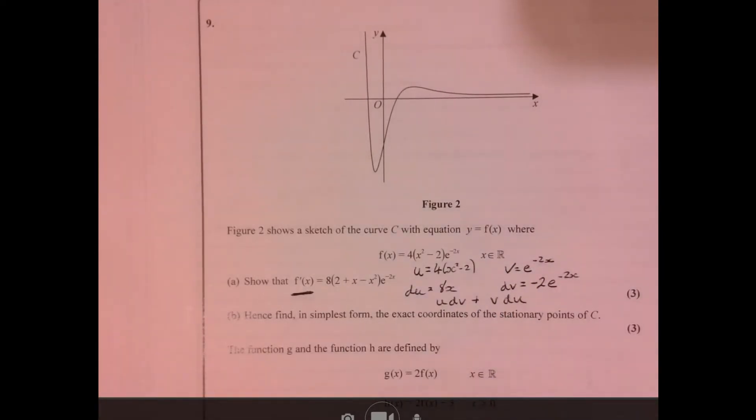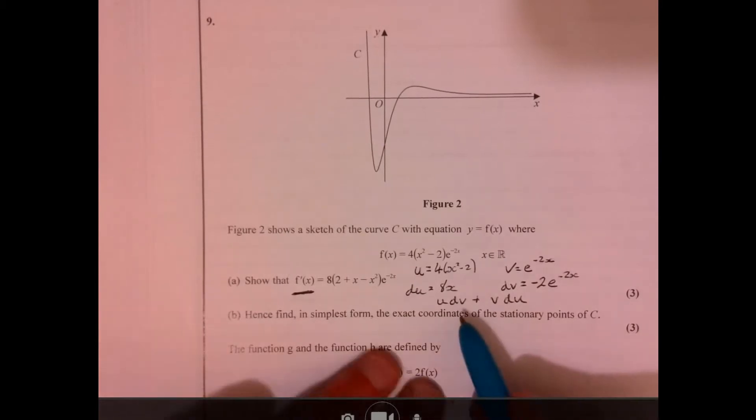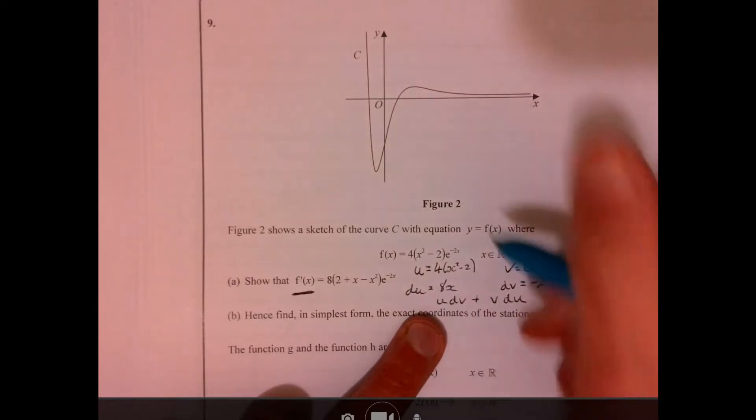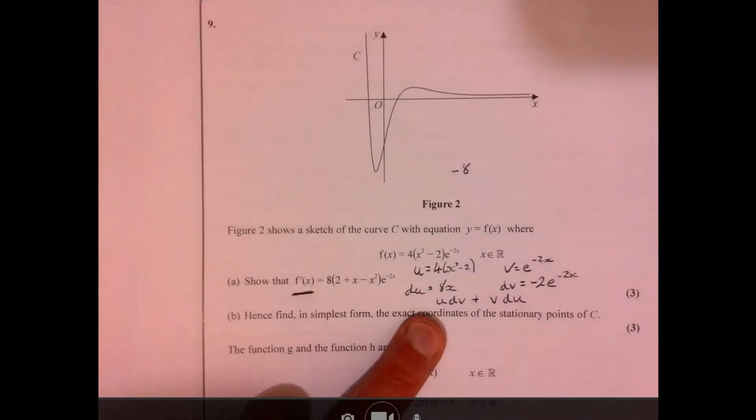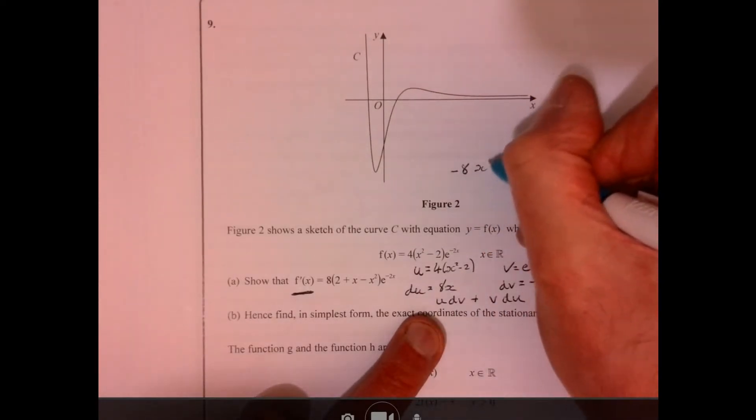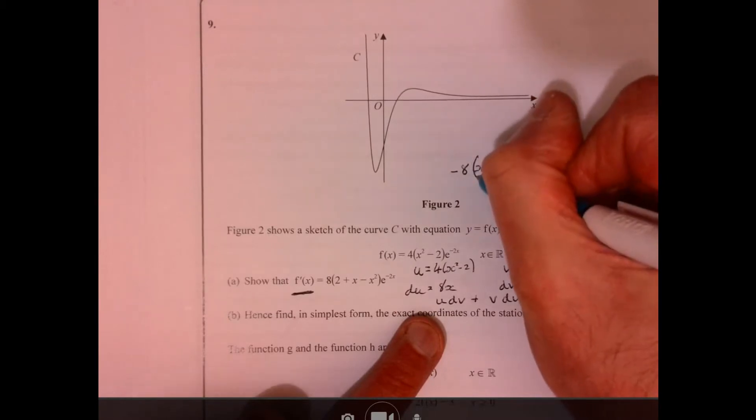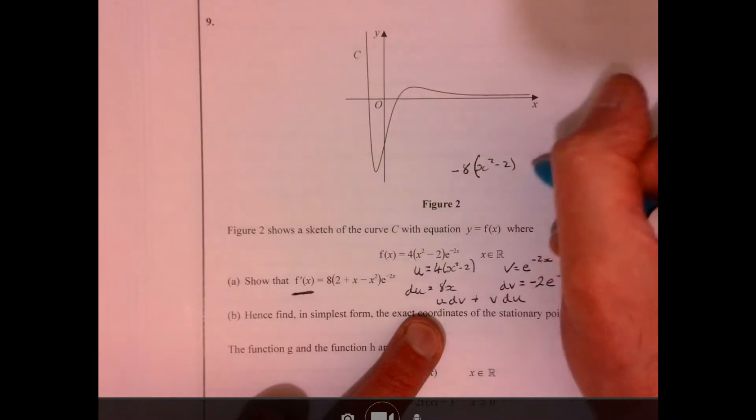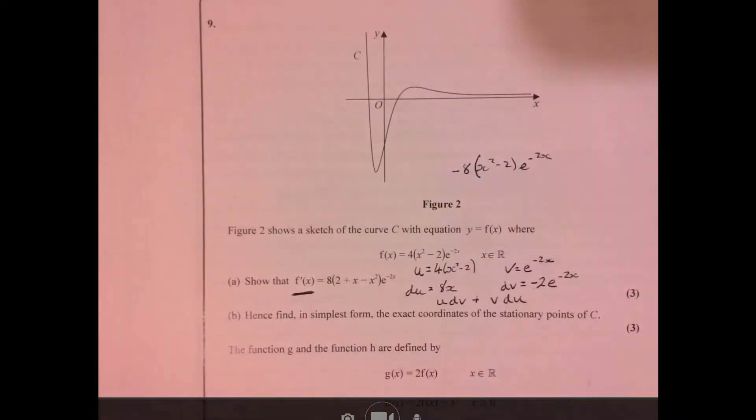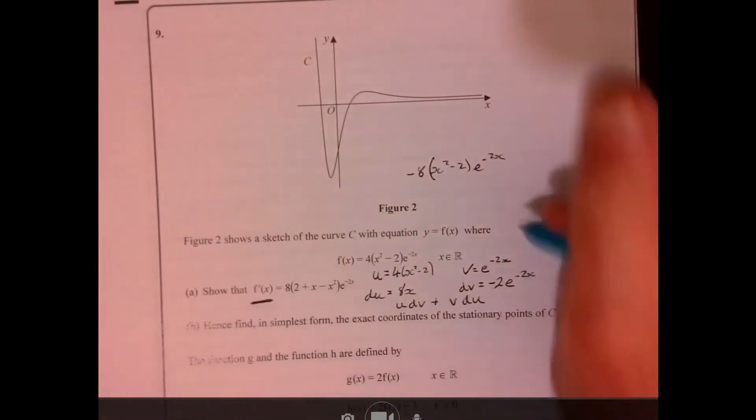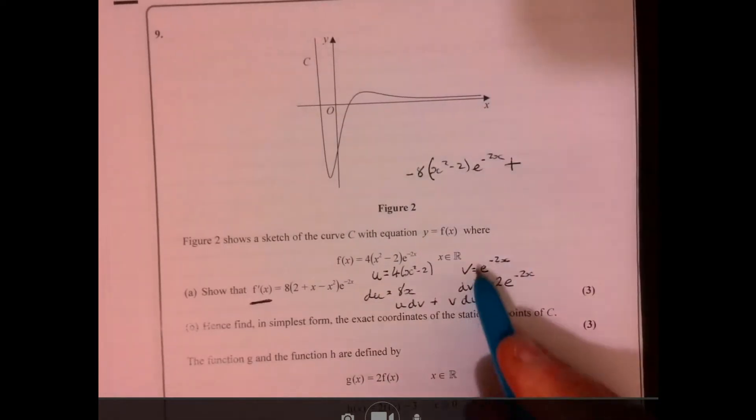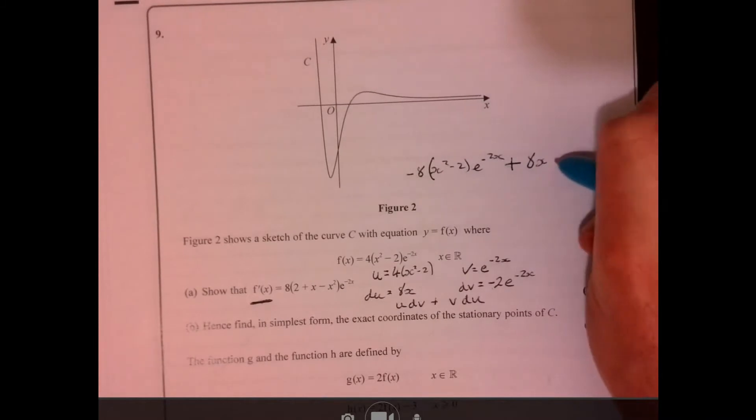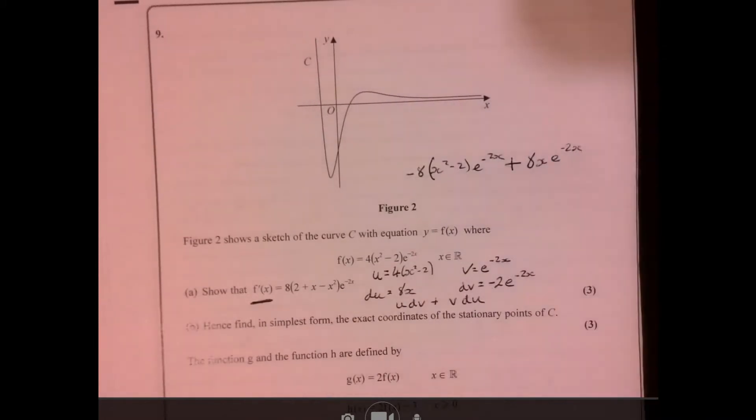If we just piece all of that together, what's that going to give us? We're going to get minus 8 times this. I'm going to write it up here so you can see what I'm doing. We've got minus 2 times this bit and obviously times e to the minus 2x. And then we've got to add the du. So we've got 8x and then e to the minus 2x.